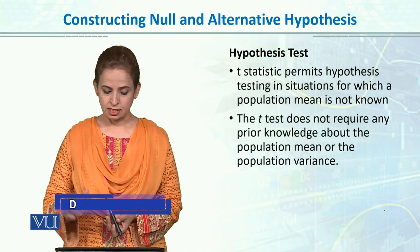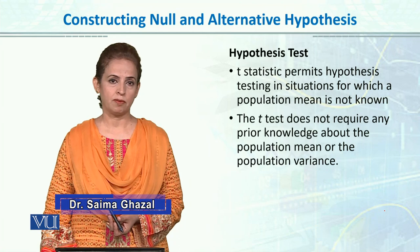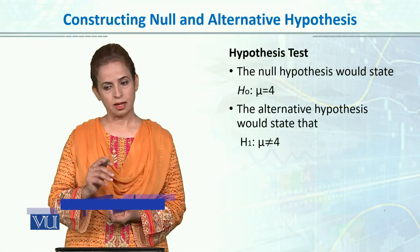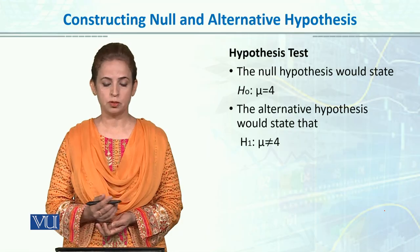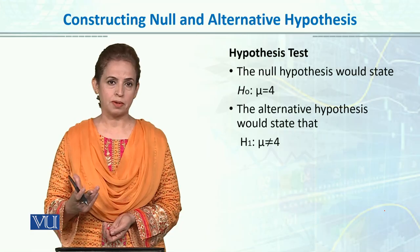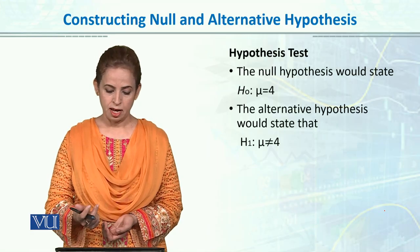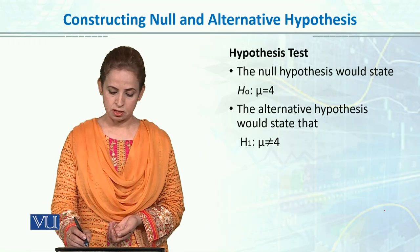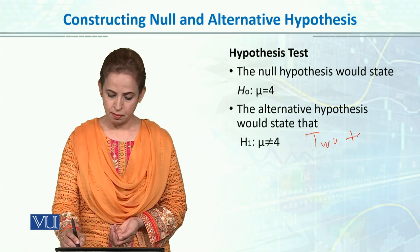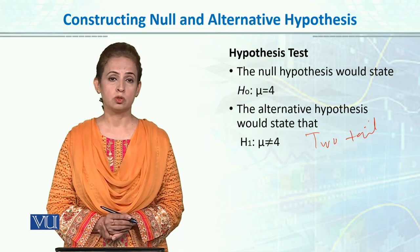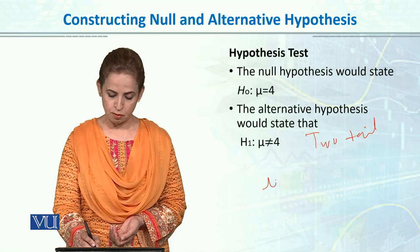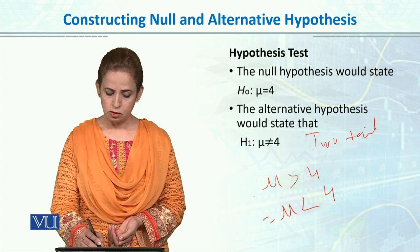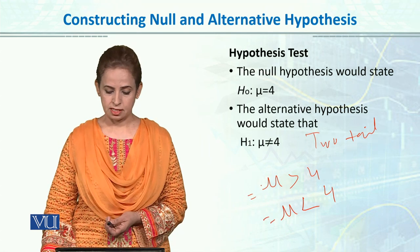T-Test does not require any prior knowledge about the population, so usually how we construct hypothesis, it could be one-tailed or it could be two-tailed. For example, population mean 4 is our null hypothesis that mu is equal to 4. Lekin, alternative hypothesis may two-tailed bhi bina sakte hain, jis mein hum khenge ke mu is not equal to 4. Ya, hum ye bhi kar sakte hain ke mu is greater than 4 or mu is smaller than 4. So, we can construct hypothesis like this in T-Test.